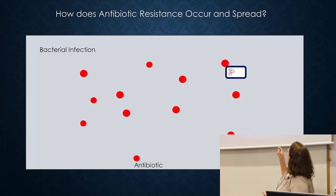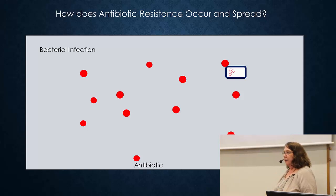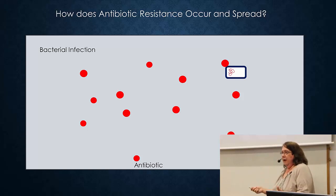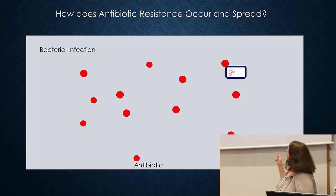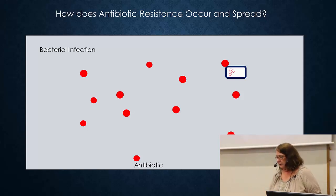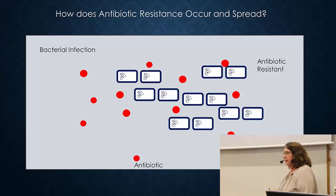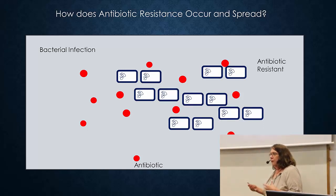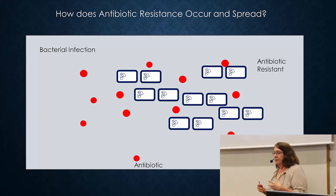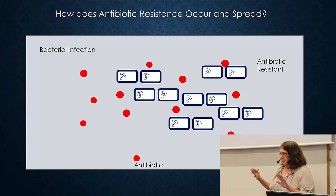But there's this one bacteria here that is still remaining — that one is an antibiotic-resistant bacteria. It essentially doesn't care; it sees the antibiotic, but it doesn't interact with the cell in the same way. That cell, now that everybody else is dead, can start to grow and divide, and you start to get more and more bacteria again. So that's one way in which resistance can arise — the cell either pre-existing or evolved to resistance during an infection.